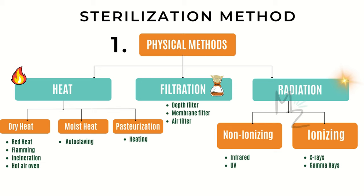Sterilization by dry heat requires a temperature in the range of 180°C for two hours. This process is used primarily for glassware and is used less frequently than autoclaving. Pasteurization is used primarily for milk and consists of heating milk to 62°C for 30 minutes followed by rapid cooling — sufficient to kill the vegetative cells of milk-borne pathogens.